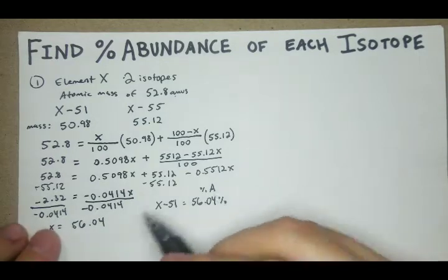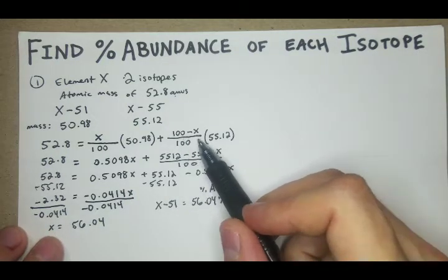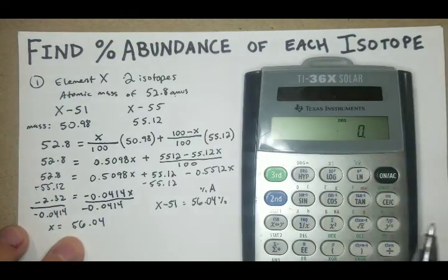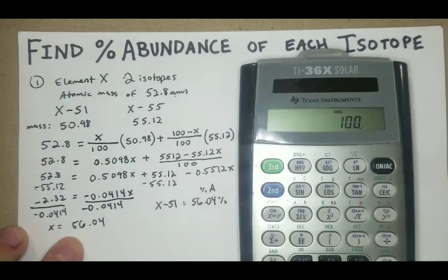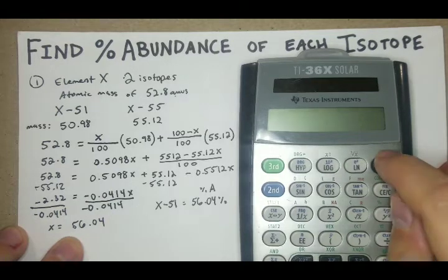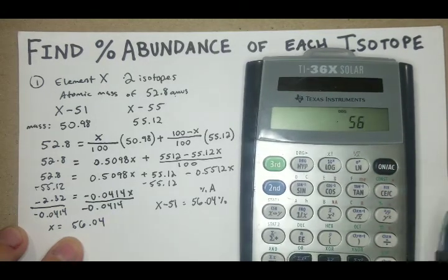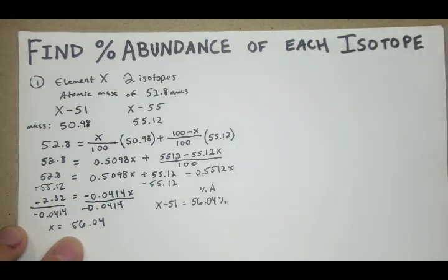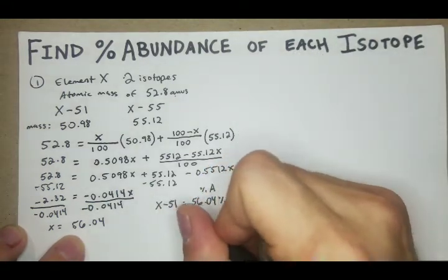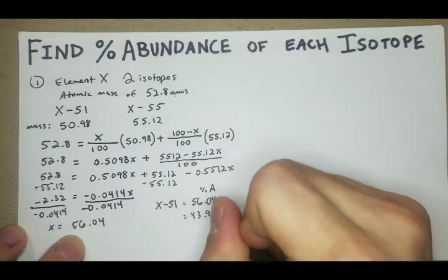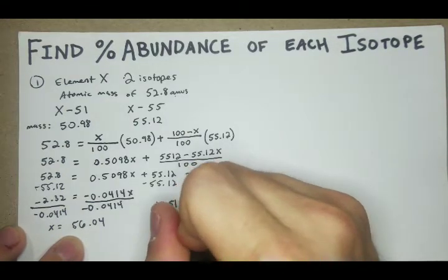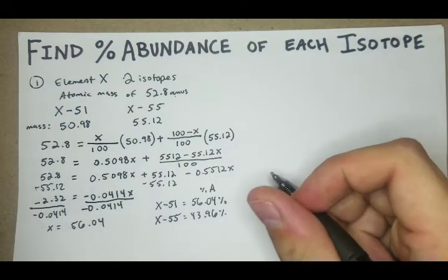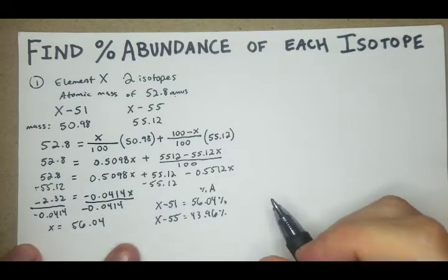Now to find the other one, it's 100 minus X, and we already know X is 56.04. 100 minus 56.04, there we get 43.96. That's the X-55 isotope.